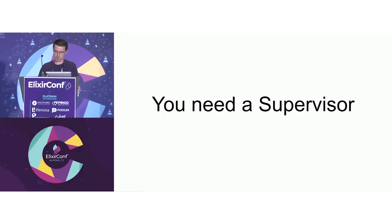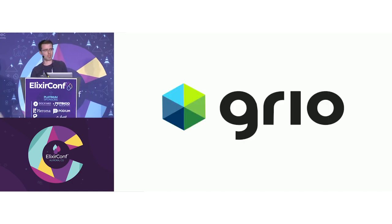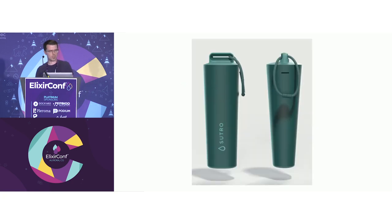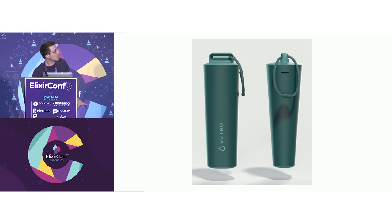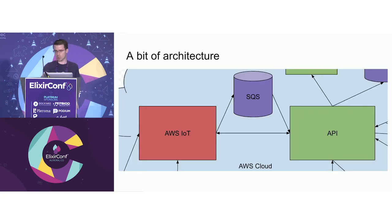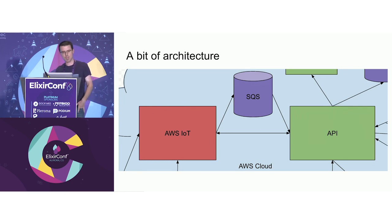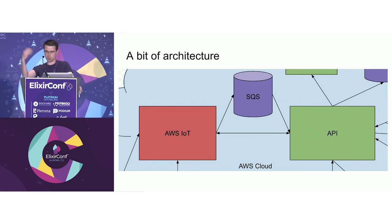Hi, my name is John Palgett and this talk is 'You Need a Supervisor.' I work at Grio, a software agency in San Francisco. The client I've been working with for the past year is Sutro — they're building an IoT device that goes inside your pool and measures your pool chemistry, saying things like 'your pH is too low' and giving recommendations about what chemicals to add. The API we built in Elixir pulls messages off an SQS queue from Amazon IoT Core over MQTT. If we go down, it's not a problem — we can restart and continue processing messages from the queue like nothing happened.